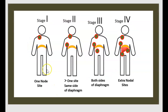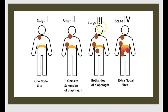Staging: Stage 1 — one nodal site. Stage 2 — more than one site on the same side of the diaphragm. Stage 3 — both sides of the diaphragm. Stage 4 — extranodal site.